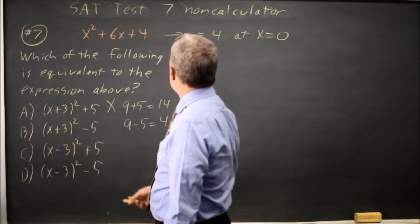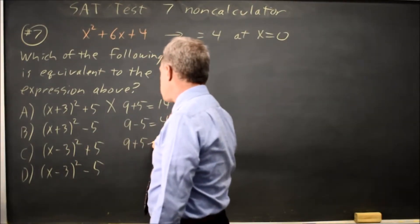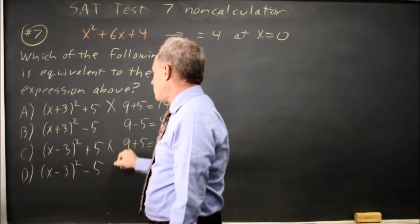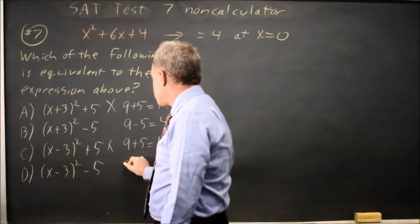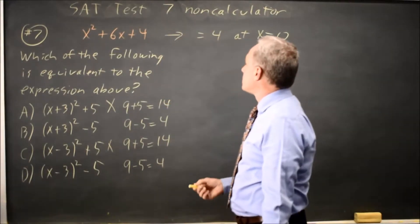0 minus 3 is negative 3, negative 3 squared is 9, plus 5 is still 14, and that is still wrong. And negative 3 squared is still 9, and minus 5 is positive 4. So either b or d is right.